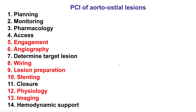To summarize, aorto-osteal lesions can be challenging to treat. The key aspects are: minimizing pressure dampening using various techniques — usually intermittent engagement and disengagement; doing multiple projections to ensure the ostium is well visualized; wiring early and using the wire as a rail to insert and disengage the guide; carefully preparing the lesion to prevent underexpansion; stenting with the goal of having the stent protrude 1-2 mm into the aorta, confirmed with intravascular imaging. Finally, if coronary physiology is done — either with FFR or resting indices — the guide should be disengaged to avoid an artificially high FFR.